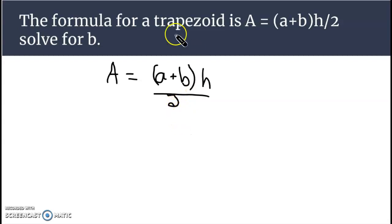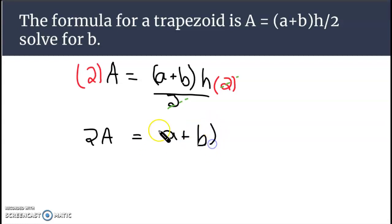So first thing we're going to do is multiply both sides of the equation by 2, and on the right side the twos cancel out or become the number 1. And on the left side we have 2 times A, 2A, and we still have the a plus b multiplied by h.